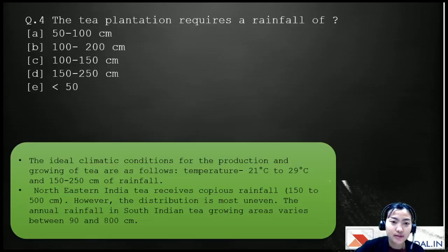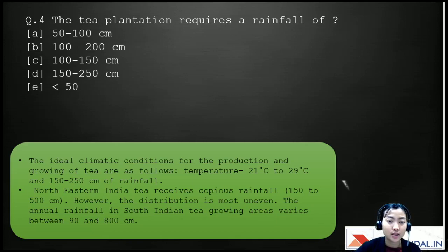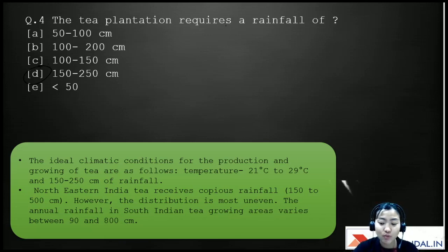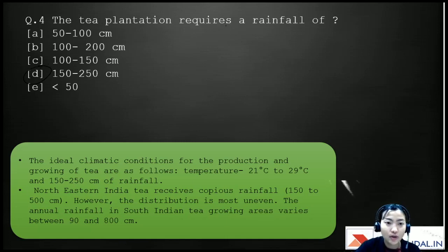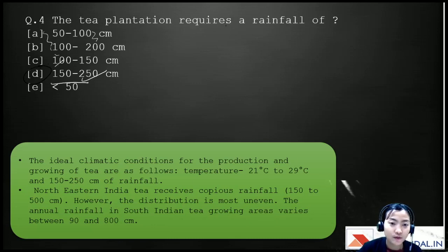The fourth question: tea plantation requires a rainfall of — A) 50–100 cm, B) 100–200 cm, C) 100–250 cm, D) 150–250 cm, E) less than 50 cm. The right answer is 150 to 200 cm. Since tea is mostly grown in humid, moist tropical and subtropical regions of India, use logic about where it's planted to eliminate unlikely options.